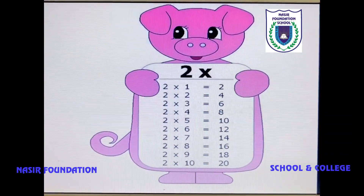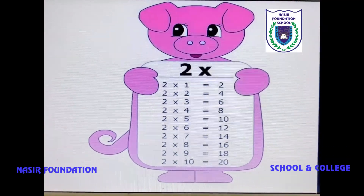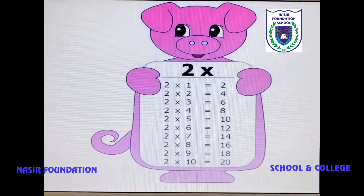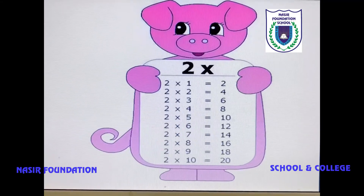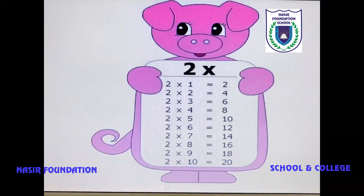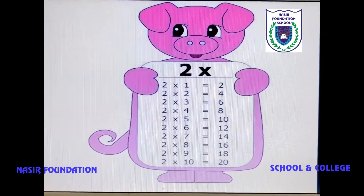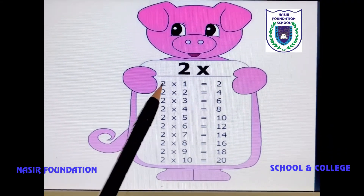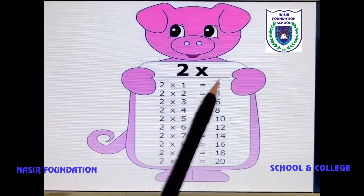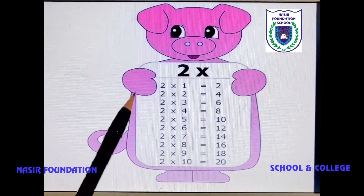If 2 is the number to be doubled, it will be 2 plus 2 which is equal to 4. So let's learn the times table of 2. 2 ones are 2.